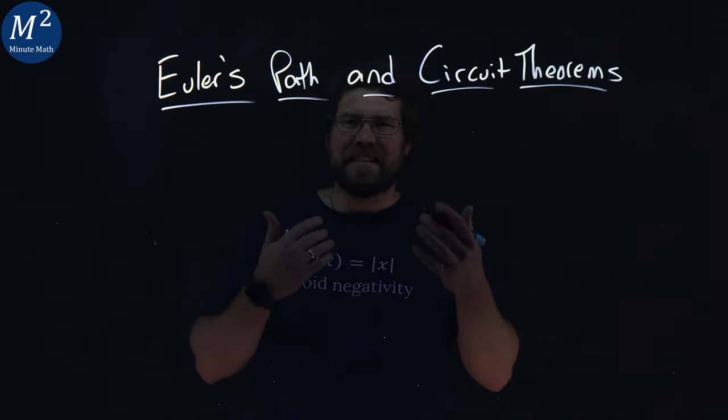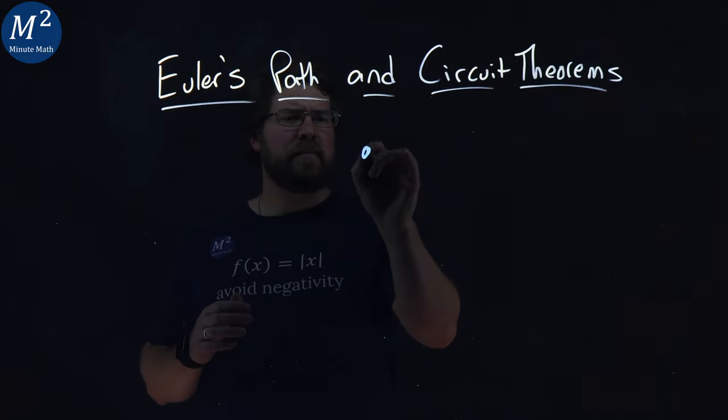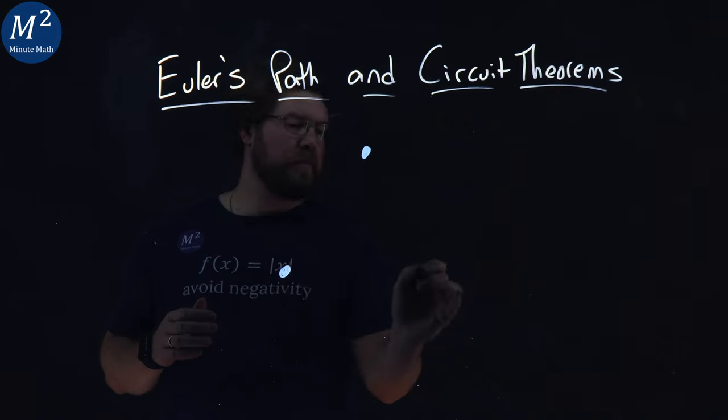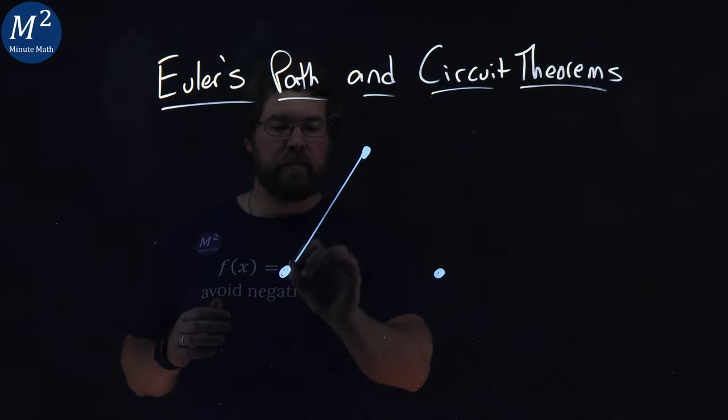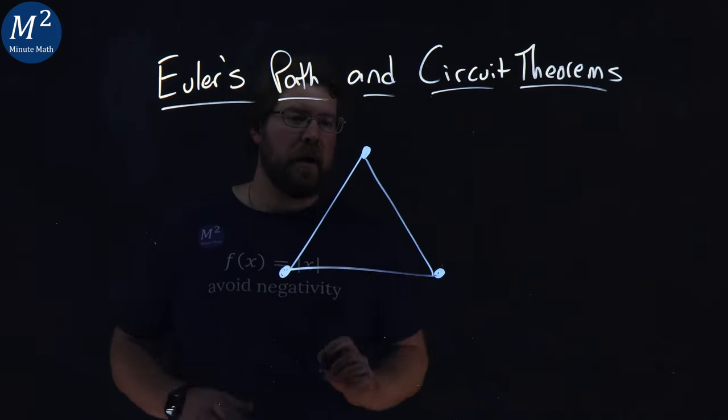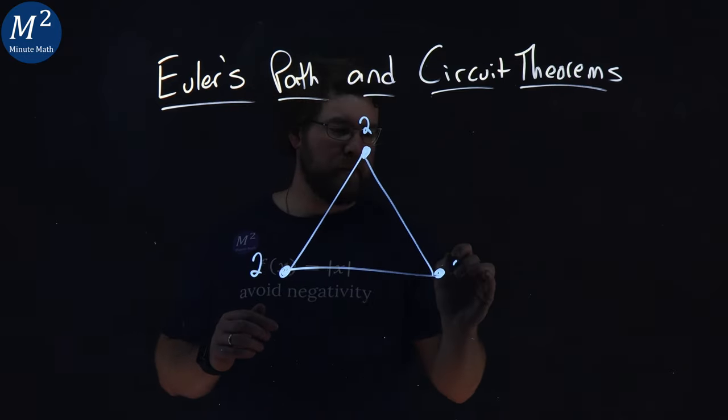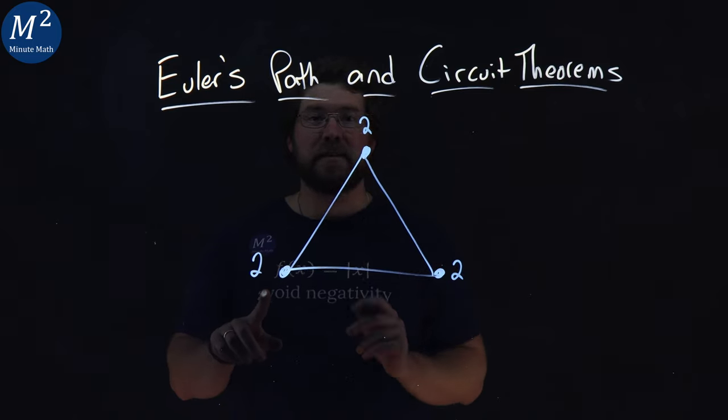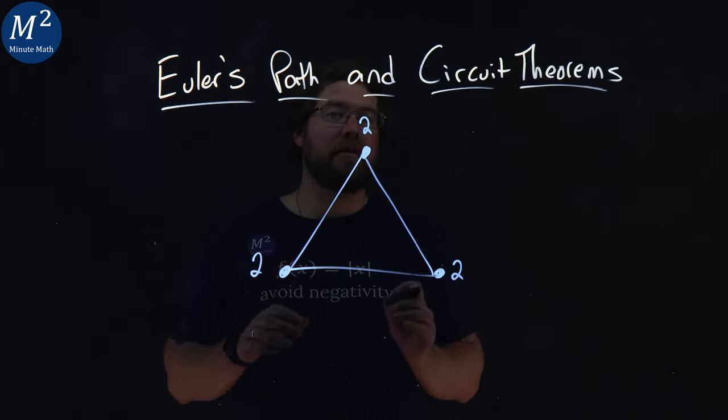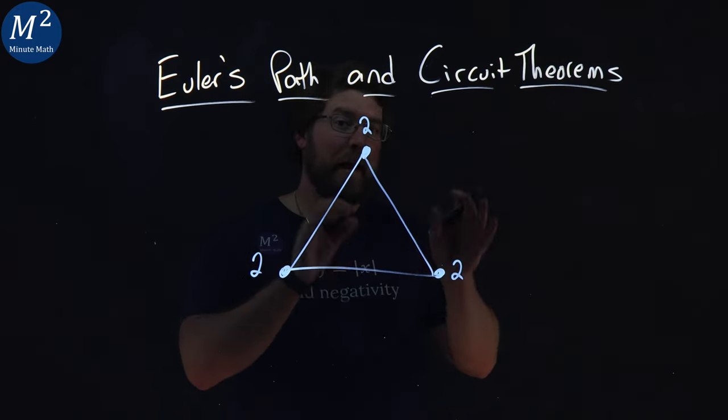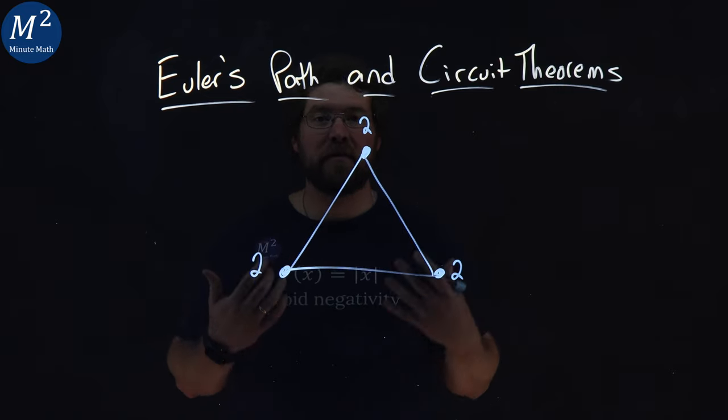So let's see this as an example. I'm going to draw a quick graph of just basically a triangle here, and we have three vertices. Each of these vertices have a degree two, meaning they're all even degree. This tells us that a Euler circuit must exist on this graph.